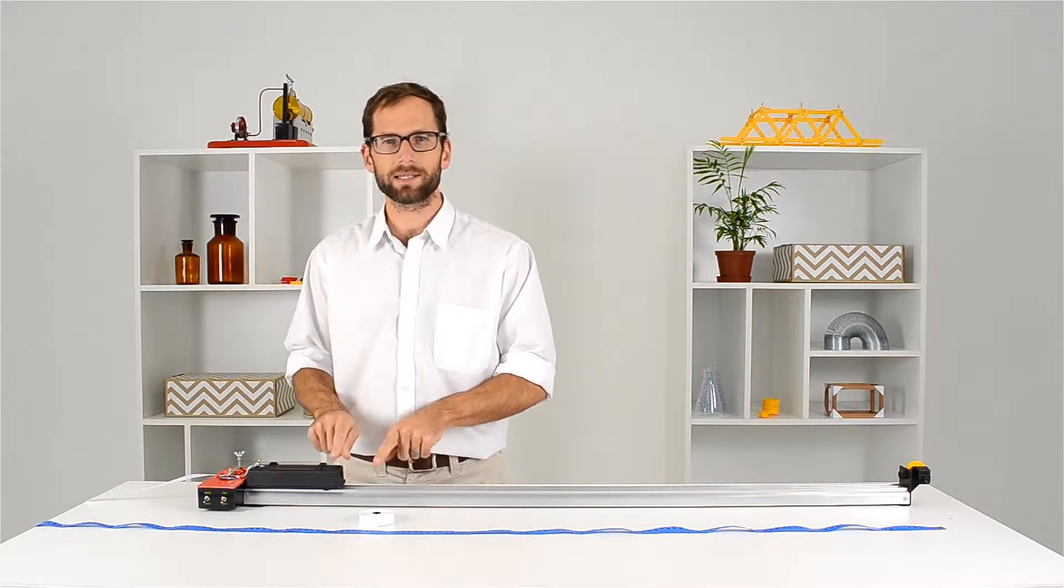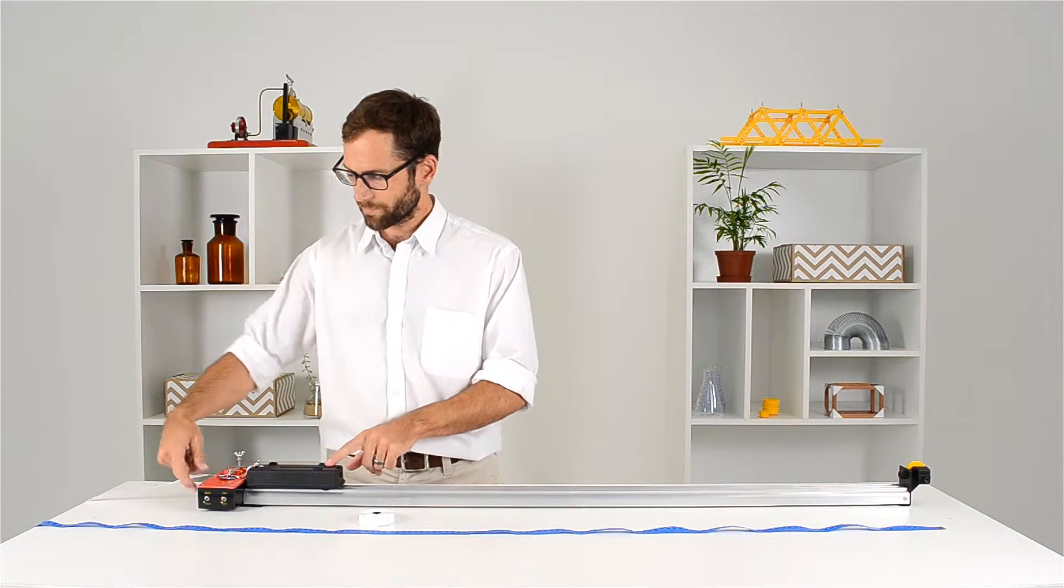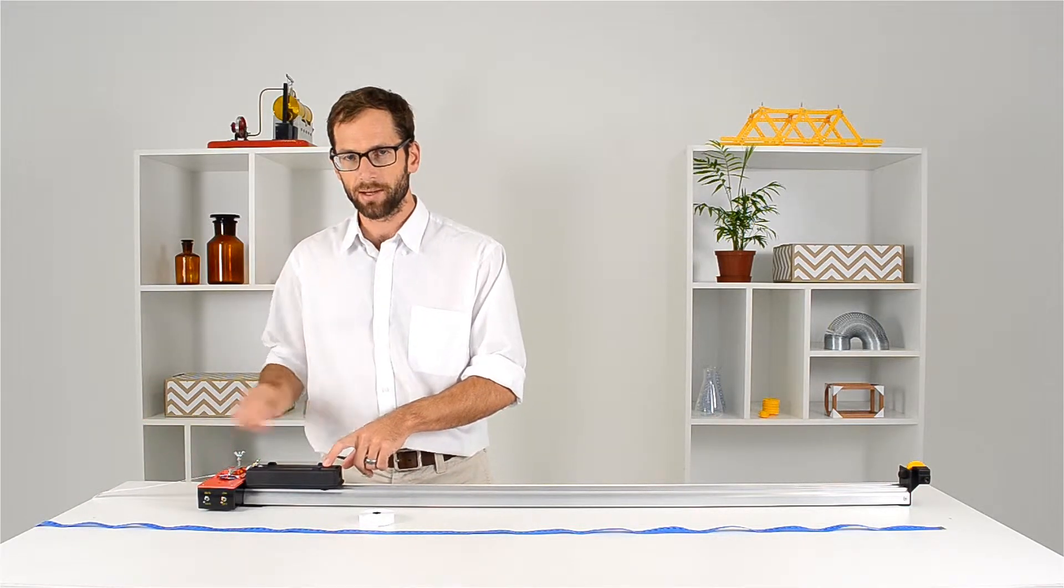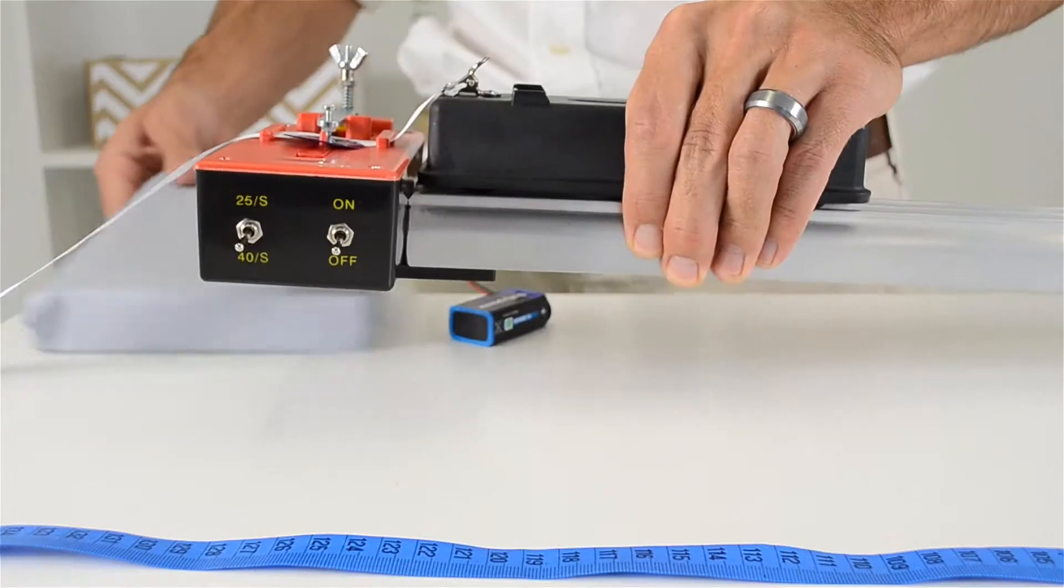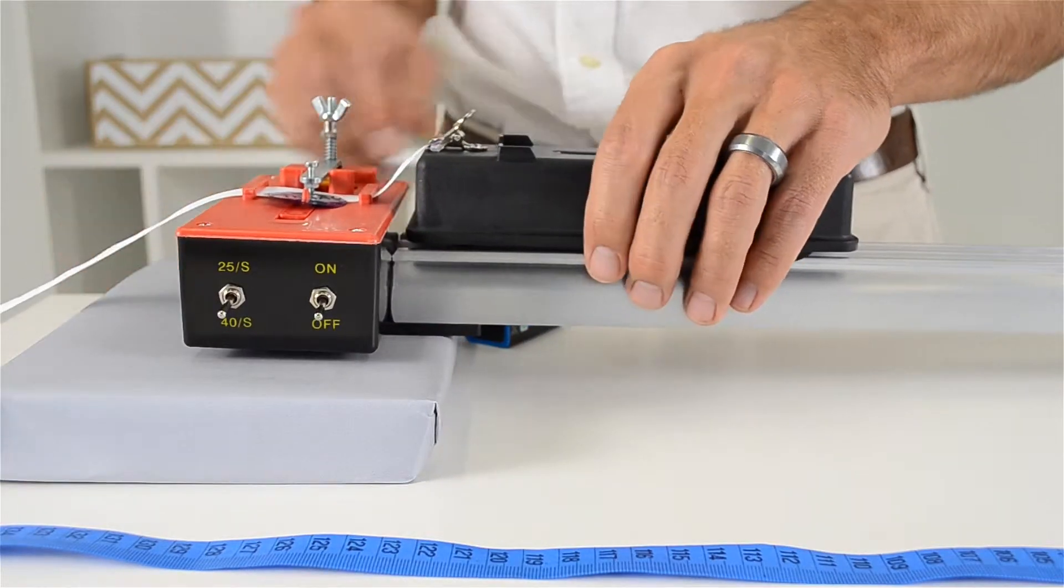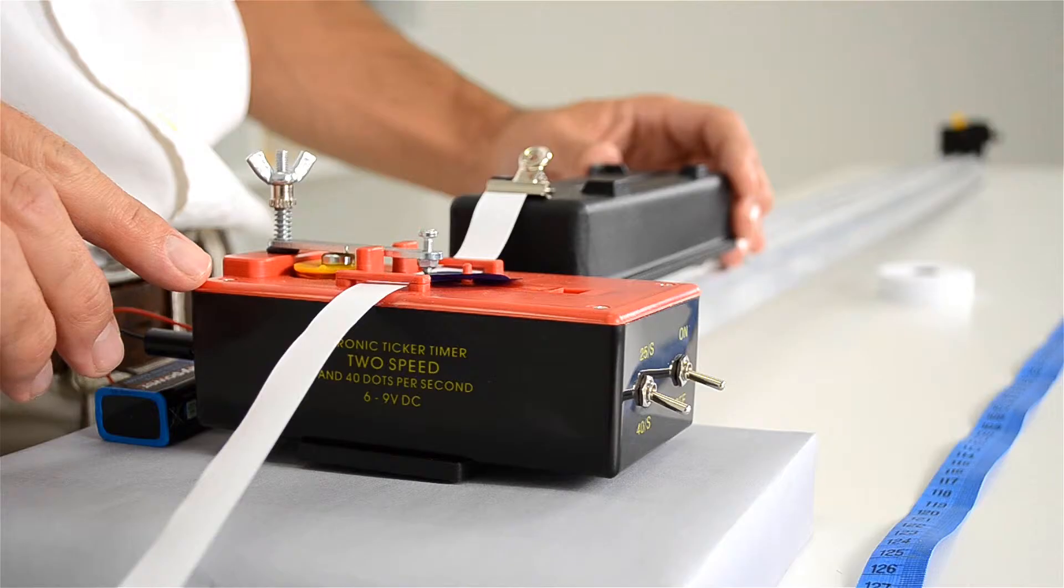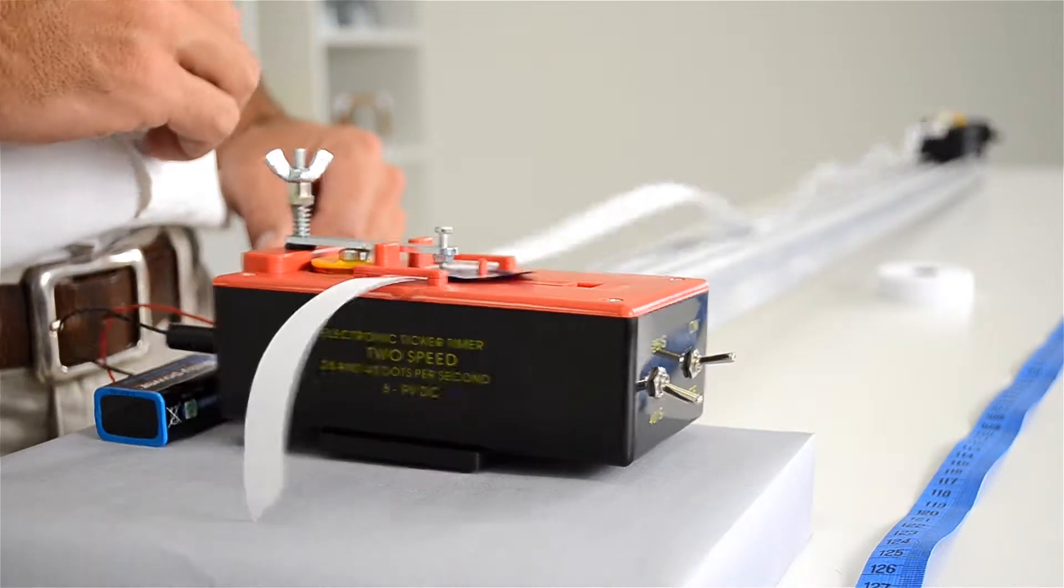And then because of the resistance or the drag that's caused by rolling on the track and also from the tape putting through here, I'm going to give it a little bit of height on this end so that I can get a constant motion. You can take a book and just place it underneath the end of the track. It is a good idea to turn the ticker timer on so that you can get the full resistance. And then give it a gentle push down the track.